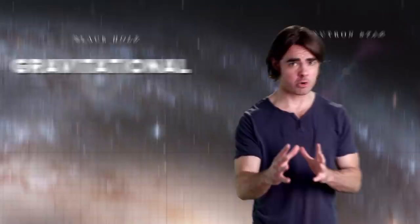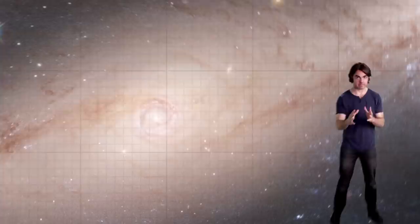They're called MACHOs: Massive Compact Halo Objects. And they're basically crunched down, compact, dead or failed stars. Black holes, neutron stars, brown dwarfs, Macaulay Culkin, etc. And they are very hard to see. But we can see these guys, at least sort of, with gravitational lensing.